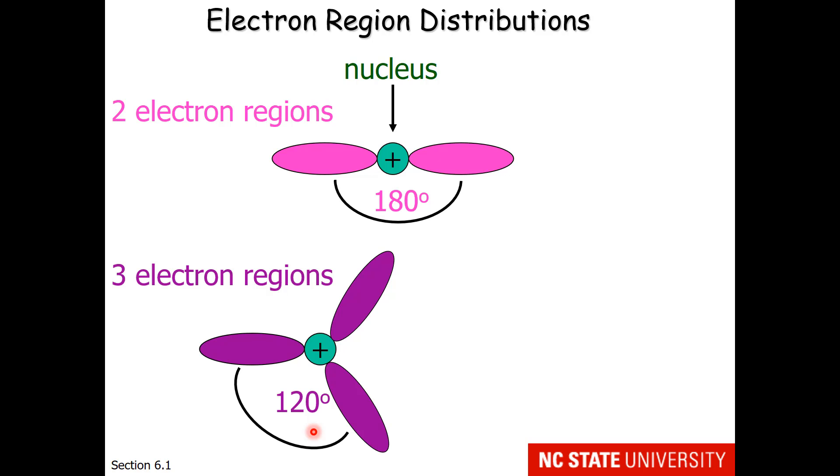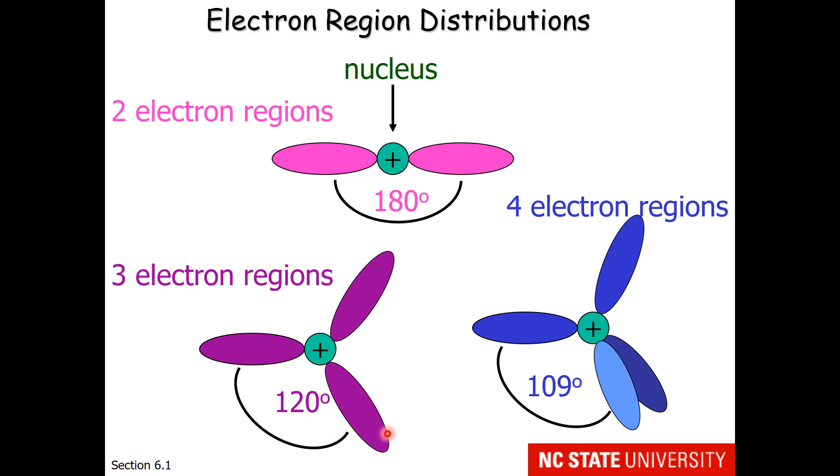Now you might think that therefore four electron regions is 90 degrees, but think three-dimensionally. Four electron regions can orient themselves so that they are 109 degrees apart. What we have is two in the plane, and then one coming toward you, and another going back into the screen. So it is a three-dimensional structure.